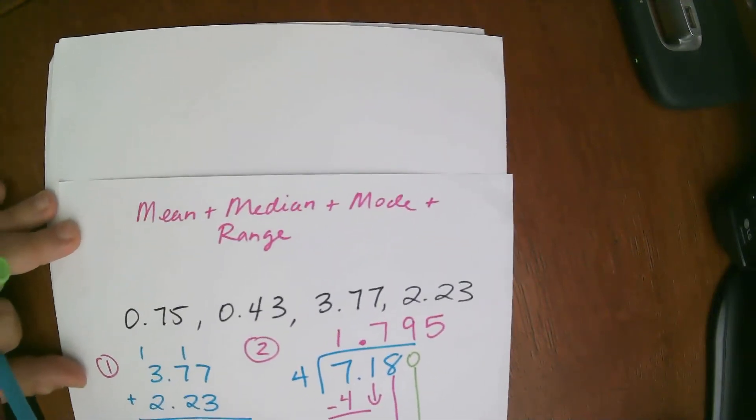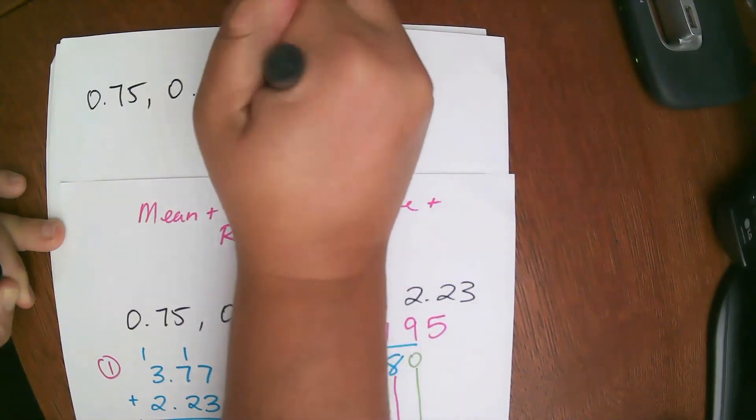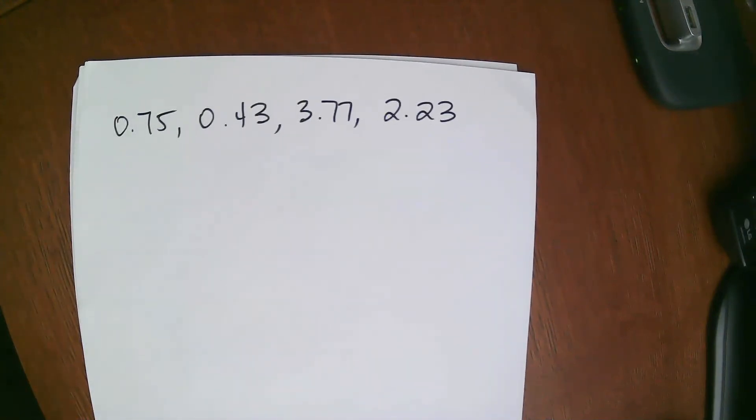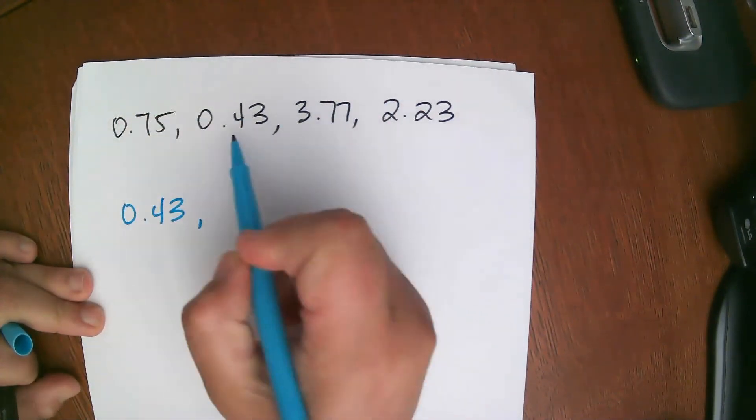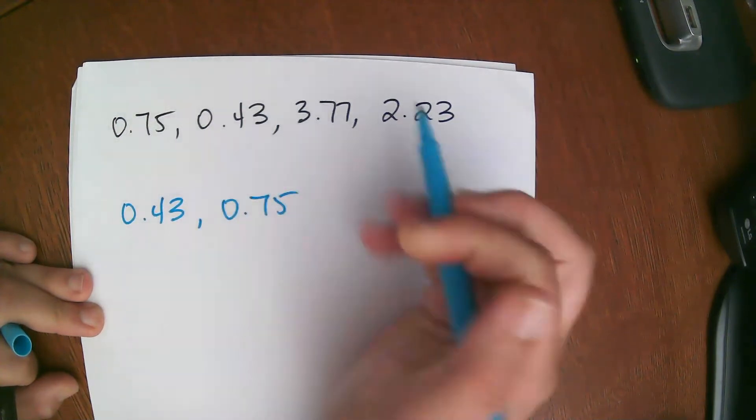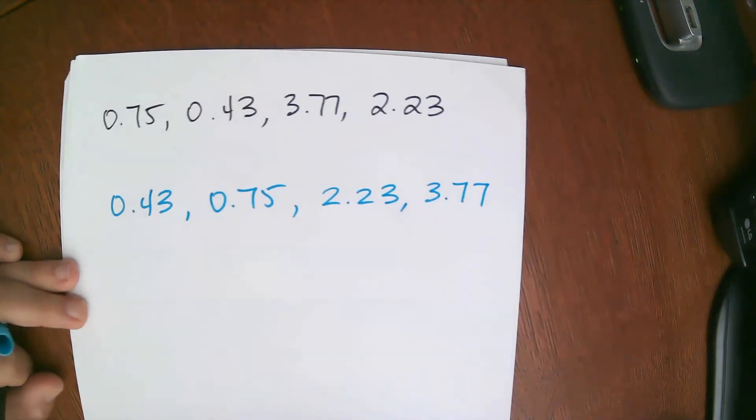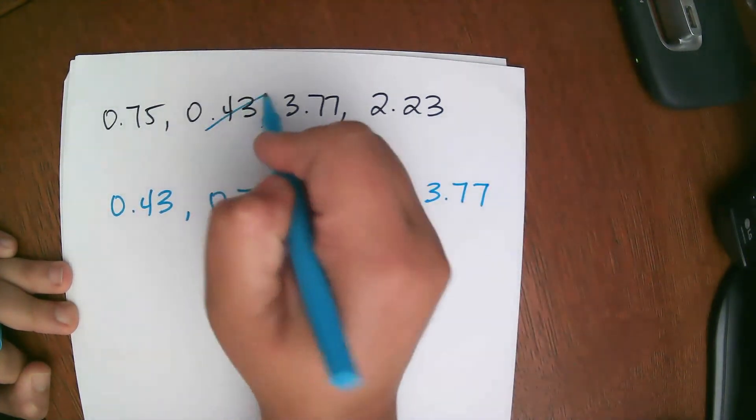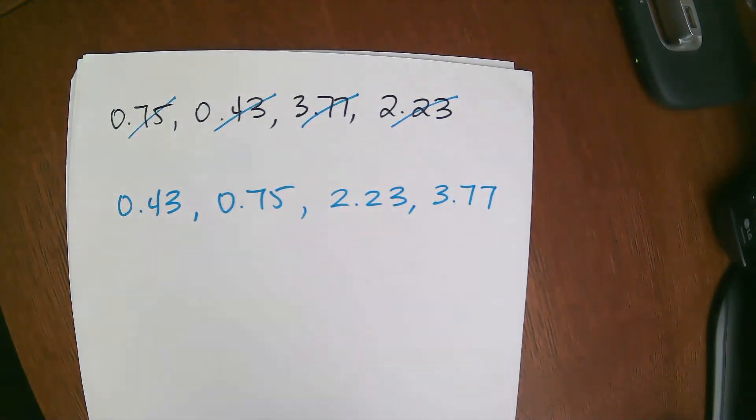So now let's look at the median. So what I'm going to do is I'm going to rewrite these numbers on a new page. So the first thing we want to do for our median is we want to put them in order from least to greatest. So I'm going to start listing them in order from least to greatest. So this guy is my smallest: 0.43, 0.75, 2.23, and 3.77.